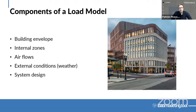Components of a load model: first, we have the building envelope — all the glazing, exterior walls, and the roof. Then we have the internal zones. If we're looking at a whole building, we might have hundreds of zones; if we're looking at just one room, we have just one zone. Both are part of our load model.